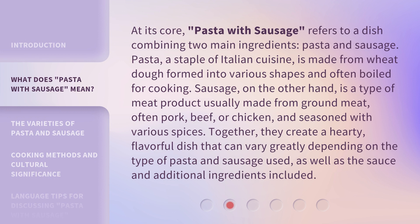At its core, pasta with sausage refers to a dish combining two main ingredients: pasta and sausage. Pasta, a staple of Italian cuisine, is made from wheat dough formed into various shapes and often boiled for cooking. Sausage, on the other hand, is a type of meat product usually made from ground meat — often pork, beef, or chicken — and seasoned with various spices. Together, they create a hearty, flavorful dish that can vary greatly depending on the type of pasta and sausage used, as well as the sauce and additional ingredients included.